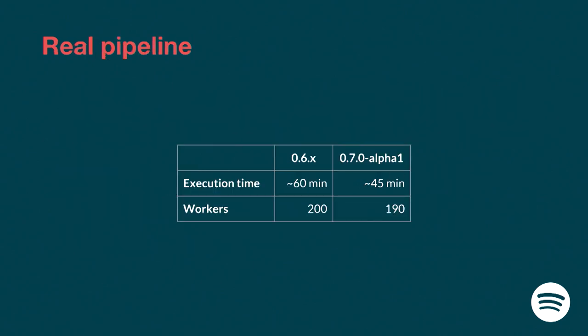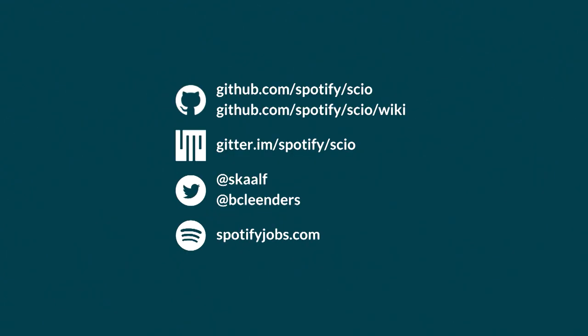The question is: what happens when you actually run that on a real pipeline? We ran a few tests on a well-behaved pipeline written by someone who cares about performance. We use a bit fewer workers, and we go from 60 minutes to roughly 45 minutes to run the pipeline on the same dataset — about 25% faster just by upgrading to Scio 0.7.